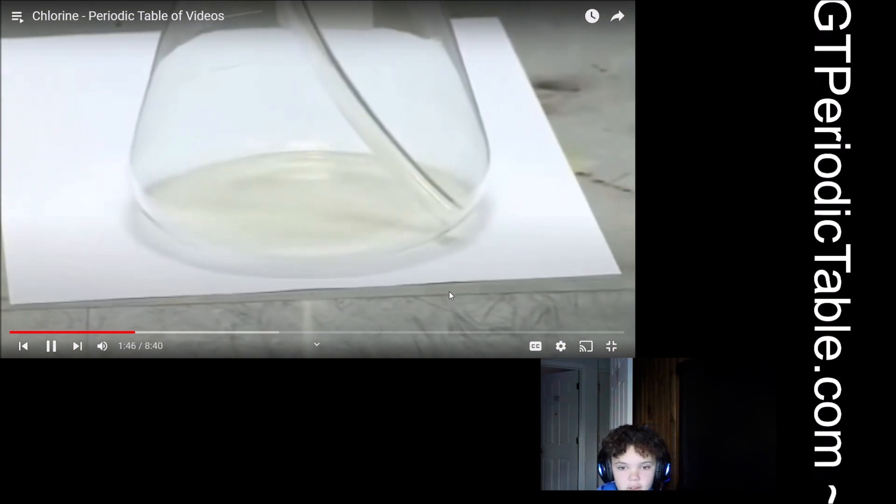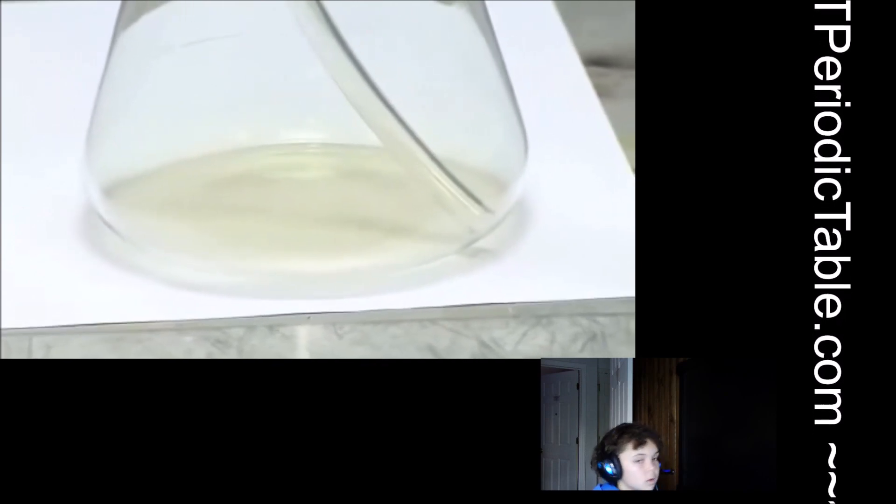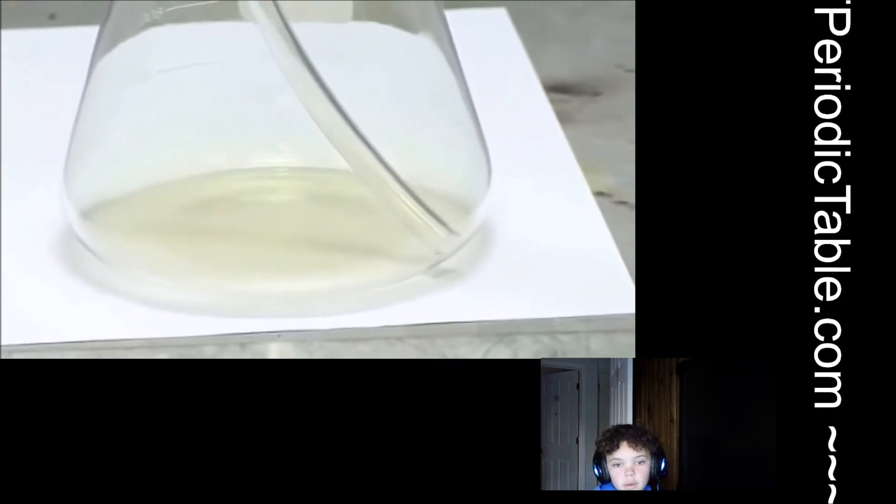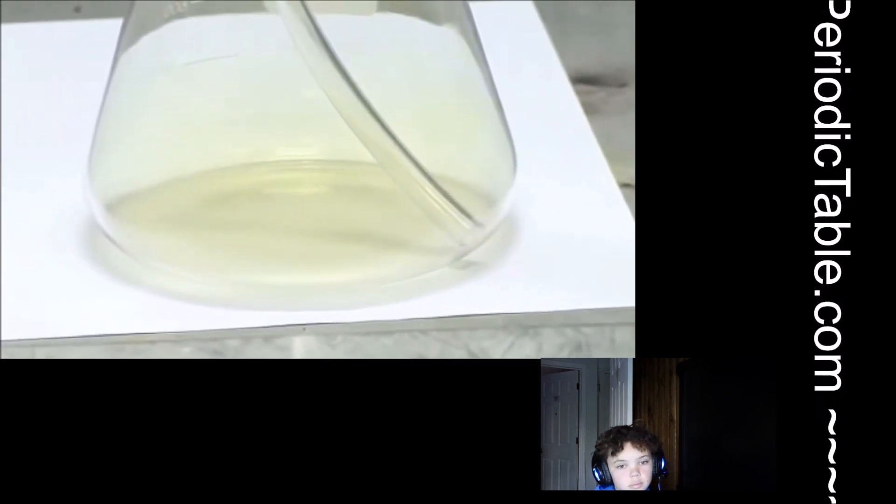You can see the yellow colour against the white background on the paper. So now we're starting to fill that flask with Chlorine. It's quite dense, so it will stick to the bottom of the flask. It's not like a light gas like hydrogen or helium. It won't come upwards. So now you can see the colour in that Chlorine is really quite intense.